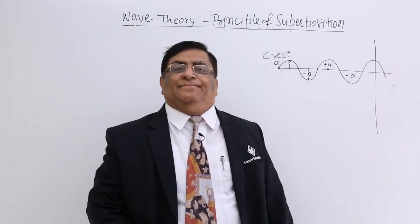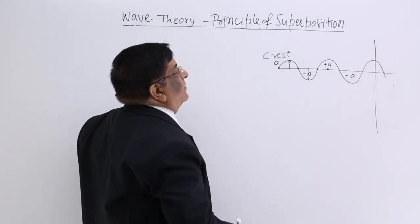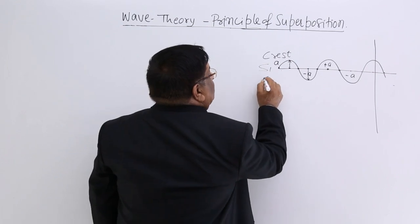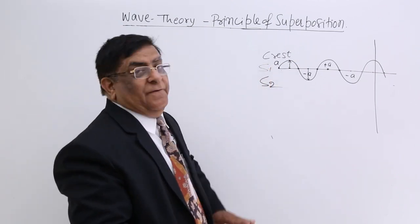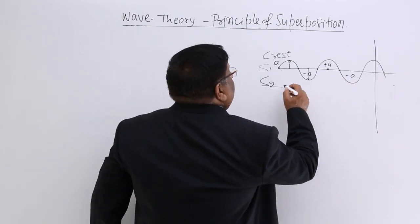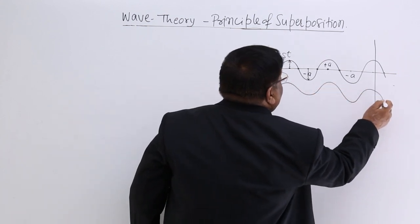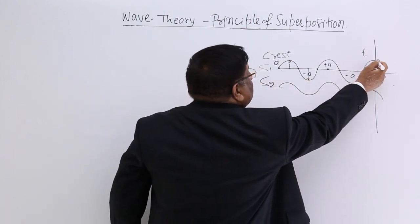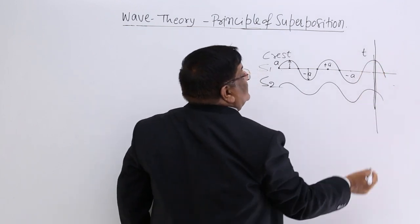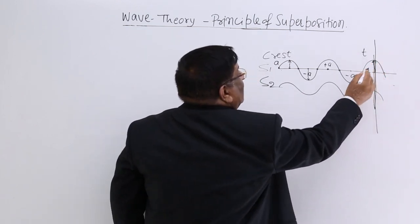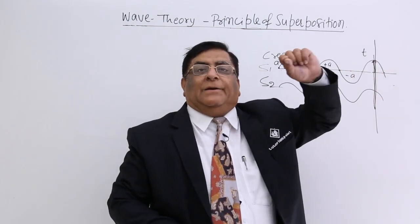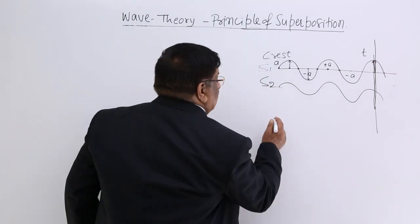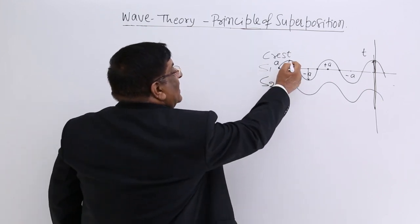The wave goes and falls on the screen. Now, at the same medium, we put another source of light, S2. This is also sending a wave. The two waves are going towards the screen. At a particular instant, because of this wave, this screen is bright, because it is giving plus A amplitude. The amplitude of the wave contains certain energy, certain intensity. How much is the intensity of light related to amplitude A?